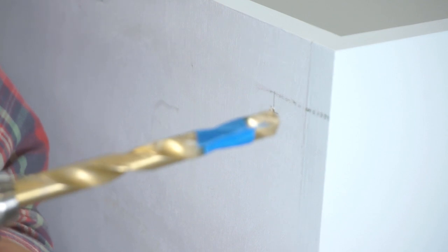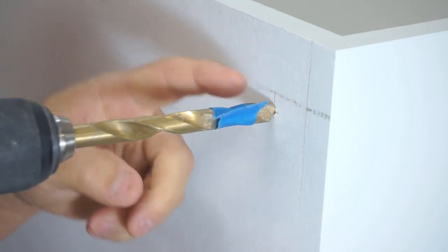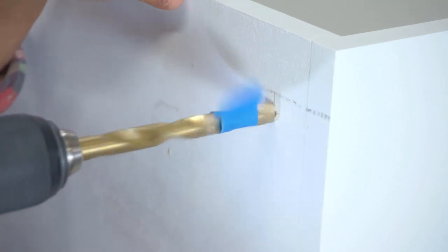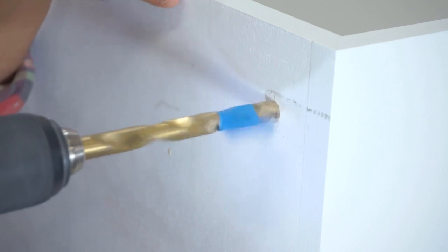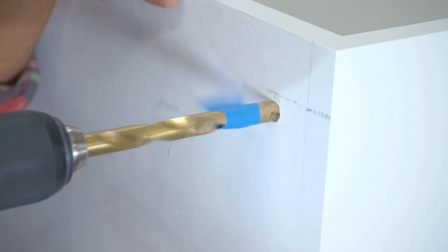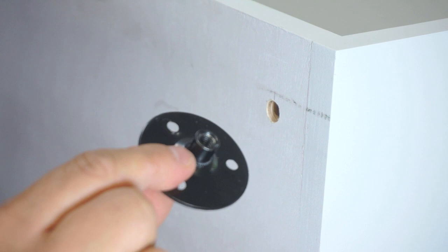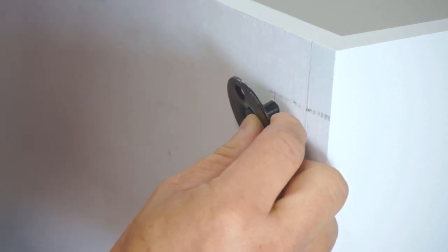Alright, here's our seven-sixteenths bit and now we're just going to follow that pilot hole carefully and we've got blue tape to mark our five-eighths of an inch deep. And you see how the drill bit didn't bounce when you start it because it followed the pilot hole.